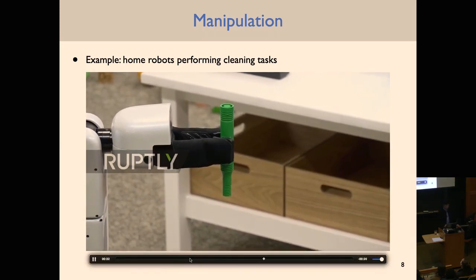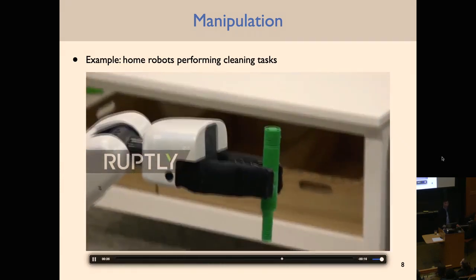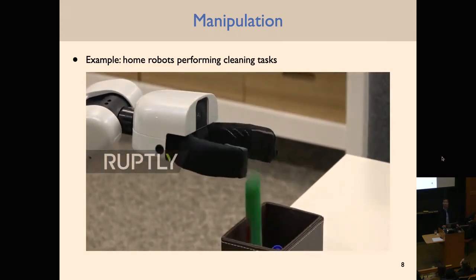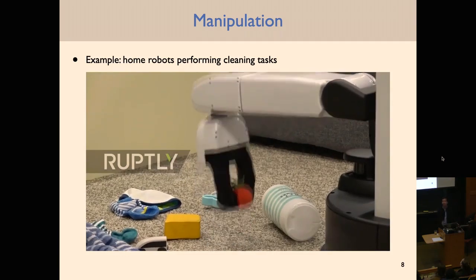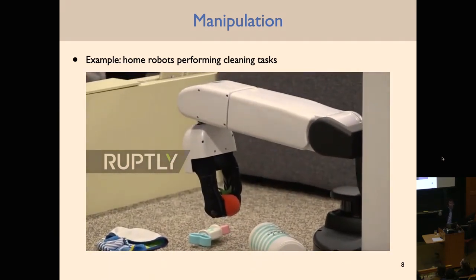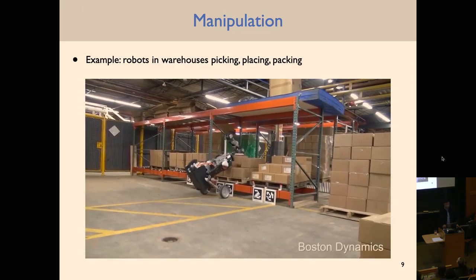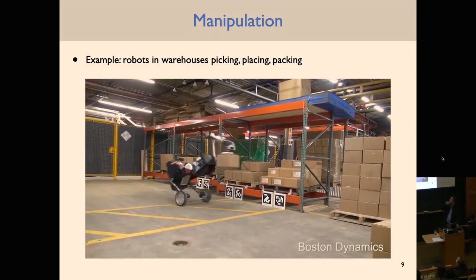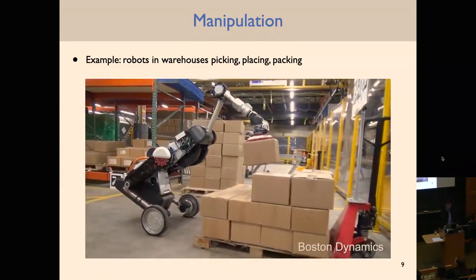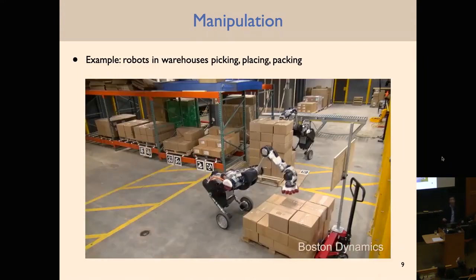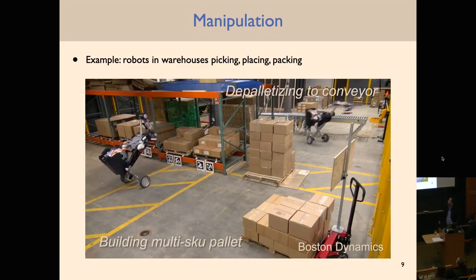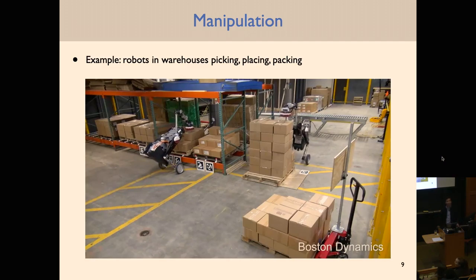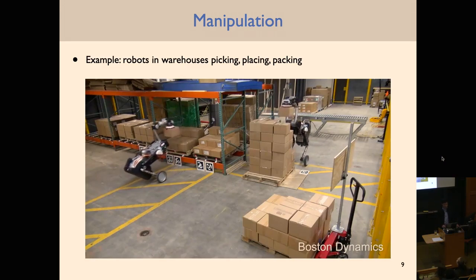The robot has to figure out what can be manipulated — like clutter in the home versus large pieces of furniture — identify those objects, pick them up, and place them. There are also other applications of manipulation on the horizon, such as warehouse tasks. This is an example from Boston Dynamics' Handle robot, which has vacuum suction grippers and performs pallet loading tasks, picking up heavy objects, manipulating them, and placing them to fill up pallets.